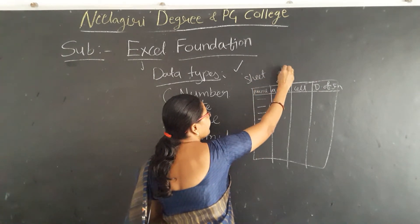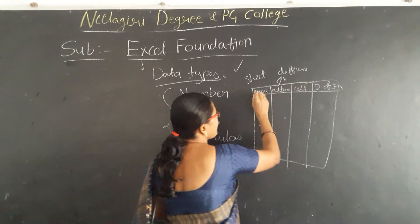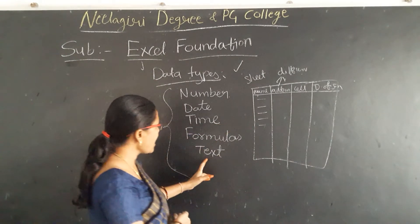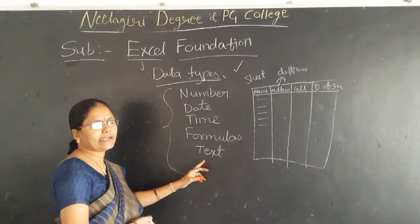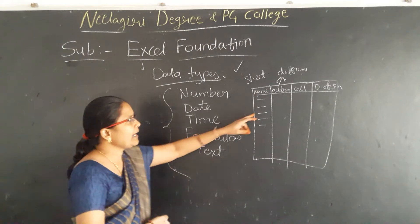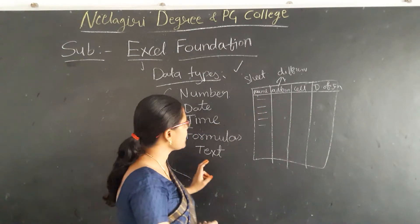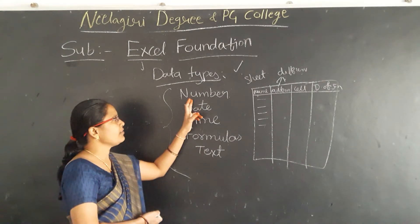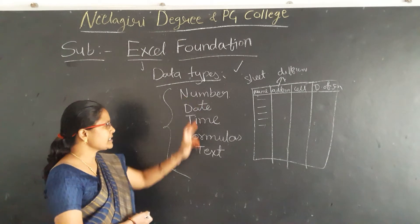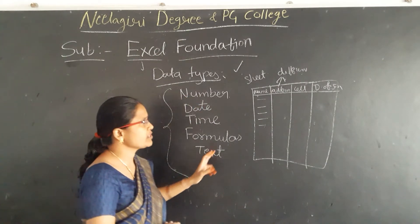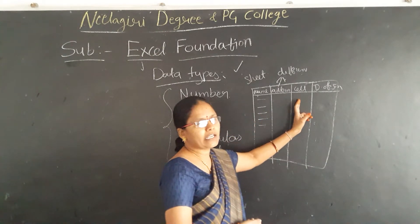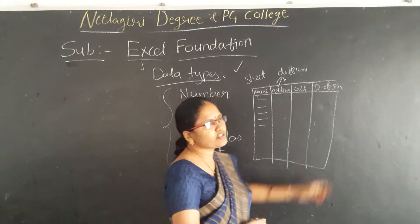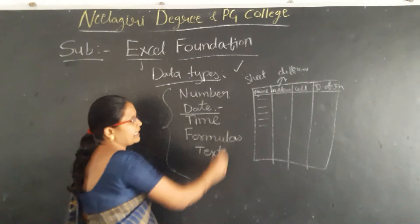It allows different data types. The name of a person is nothing but text — it consists of characters. The address is a combination of text and numbers. The cell number is stored as numbers. And the date of joining is nothing but the date type of data.